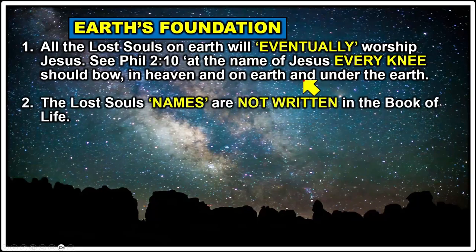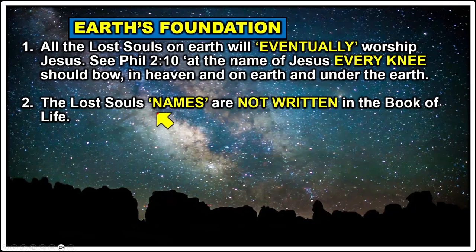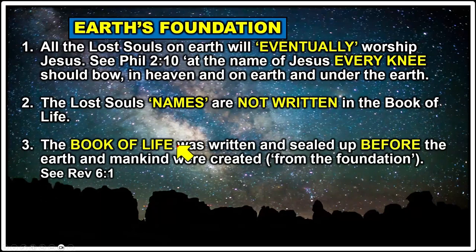Number two: the lost souls' names are not written in the book of life, meaning they will not be saved into heaven — they won't be able to get into New Jerusalem. They will eventually be burned up and be ashes. Number three: the book of life was written and sealed before the earth and mankind were created — it says 'from the foundation of the world,' and you can read that in Revelation 6:1.